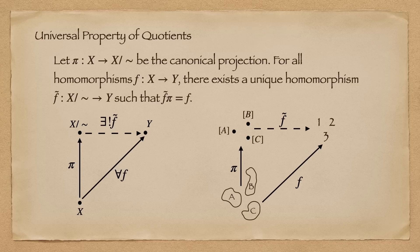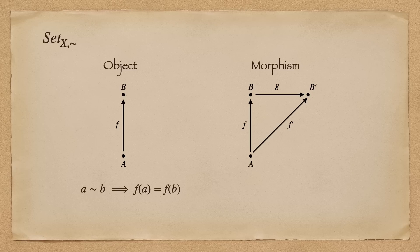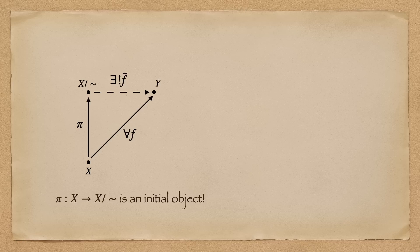Now you might ask, why is this called the universal property? Which object is the universal object here? Well, in this diagram category, whose objects are arrows of this kind that preserve the equivalence relation, and whose morphisms are commutative diagrams, I claim that our projection map, pi is an initial object in this category.